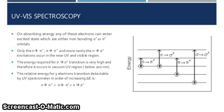So friends, on absorbing energy, any of these electrons can enter excited states which are either non-bonding, sigma star (σ*), or pi star (π*) orbitals. Only the n→π*, π→π*, and more rarely the n→σ* excitations occur in the near UV and visible region.